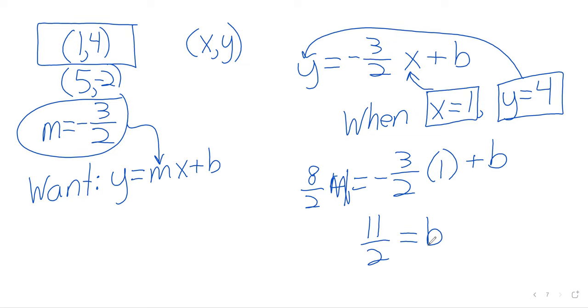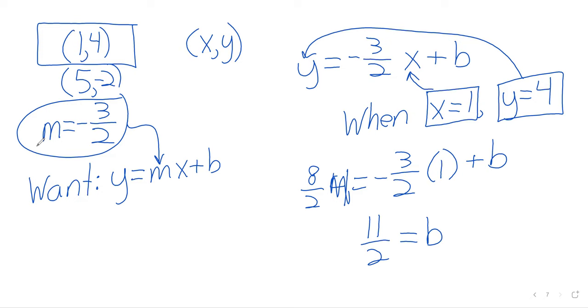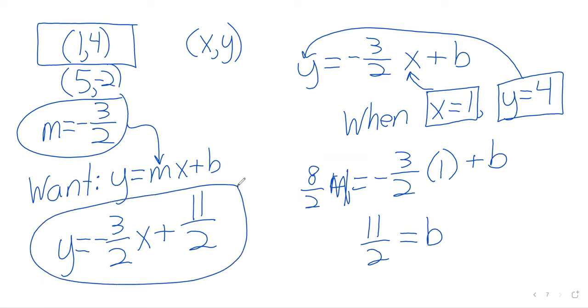We're almost done with this problem, but we're looking for the equation of a line. At no point have we written down the equation of the line. Let's make sure we actually answer the question. If we're asked for an equation, we'd better write an equation: y equals negative 3 halves x plus 11 halves. That's the process. Does anybody have any questions about the process?